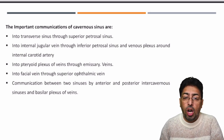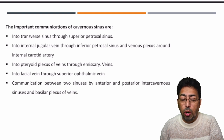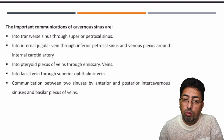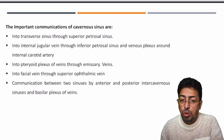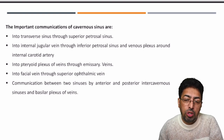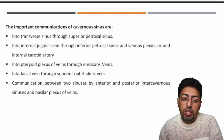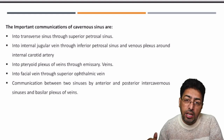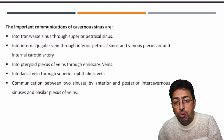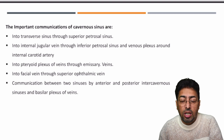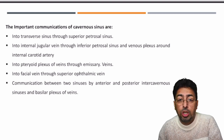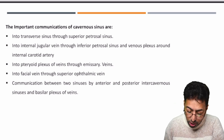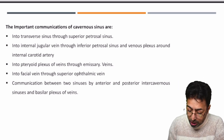Inflammation of many veins in this region can cause cavernous sinus thrombosis. Pro-coagulant conditions predispose to it, including protein C deficiency, protein S deficiency, homocystinuria, immobility, high-dose estrogen, high-dose tamoxifen, and other pro-thrombotic drugs — all of which can predispose to a more severe form of cavernous sinus thrombosis.